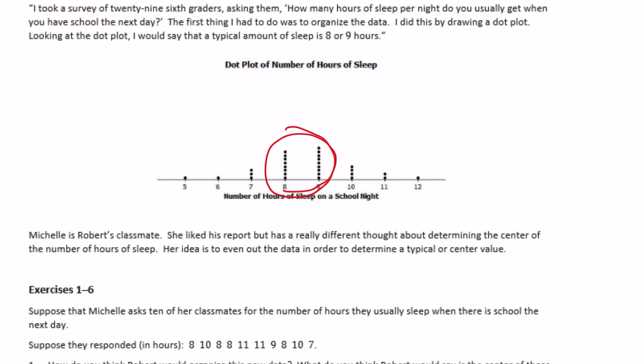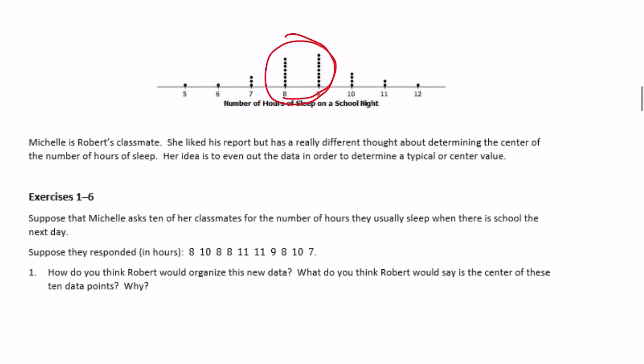Michelle is Robert's classmate. She liked his report but has a different idea about determining the center of the number of hours of sleep. Her idea is to even out the data in order to determine a typical or center value — something we would call a mean, otherwise known as the average.